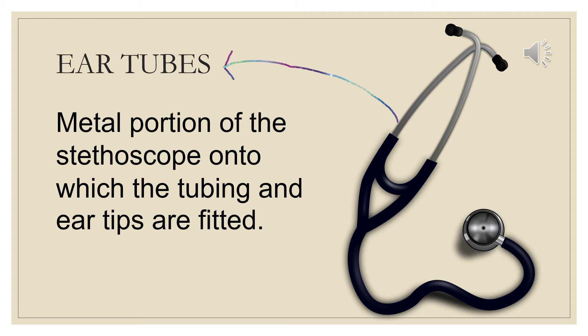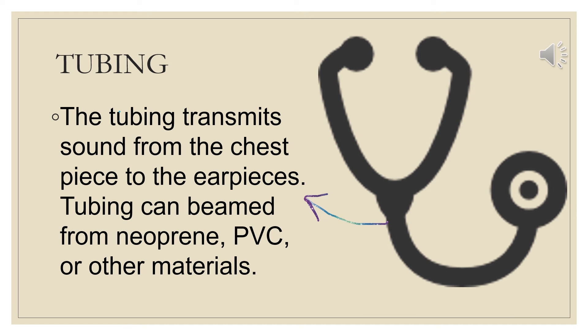The next part of the stethoscope is the tubing. Its main function is to transport the sound from the chest piece to the ear pieces. It can be made of different materials such as neoprene, PVC, and other materials. It should be kept away from children.